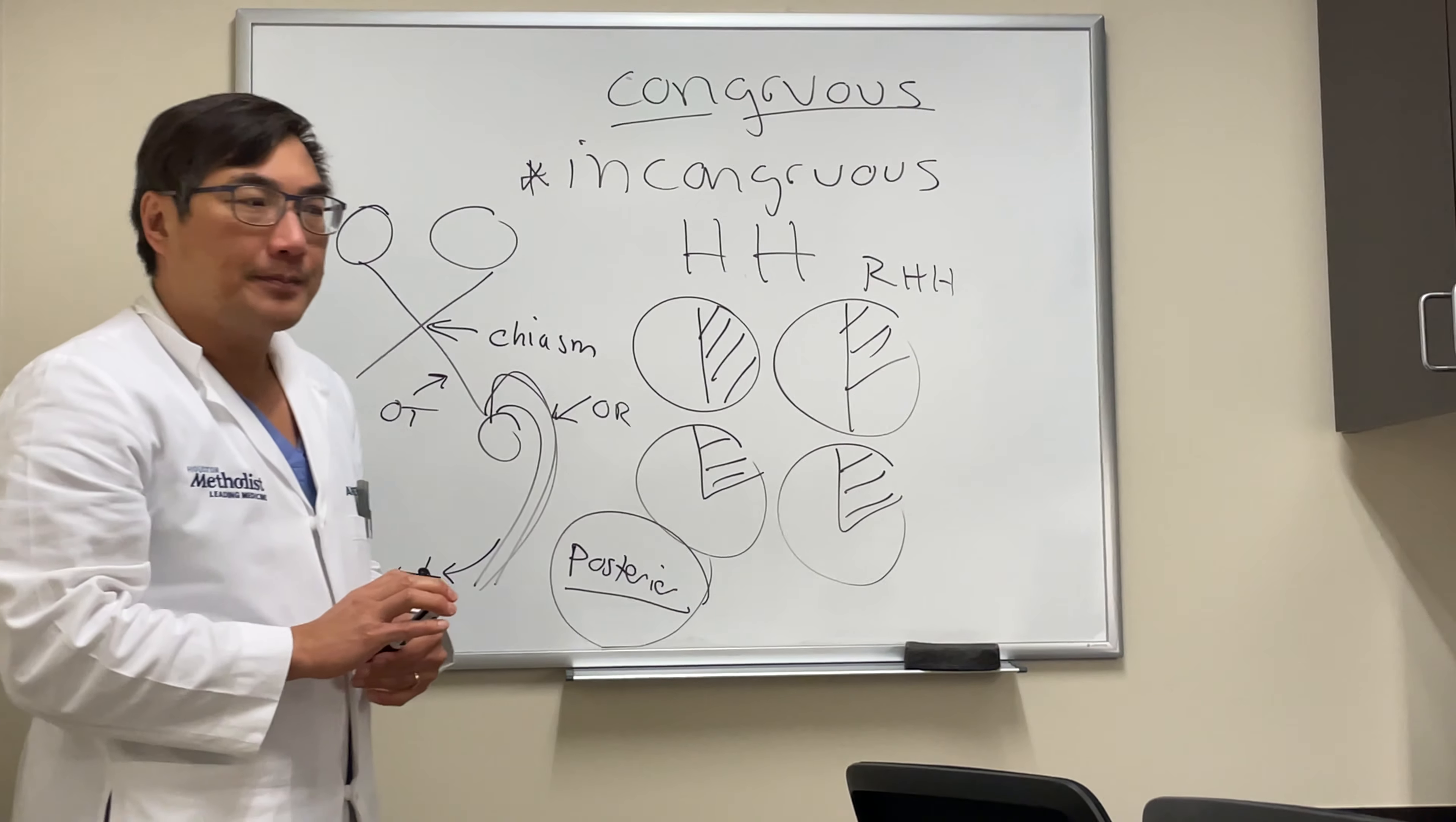The reason you need to know it is in the optic pathway or the afferent system, lesions that are behind the chiasm produce homonymous hemianopsia on the contralateral side.